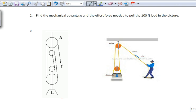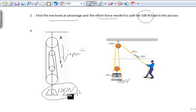Let's look at the next two. Find the MA and the effort force if it's 100 newton load. So 100 newtons and this one's 100 newtons. So let's do this one. We don't know the output, but we don't know our input force. So we cannot use MA equals output over input. We can't use that. So we'll have to use the number of ropes trick.